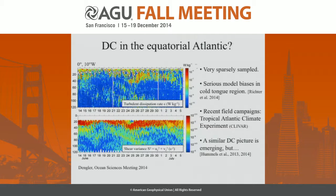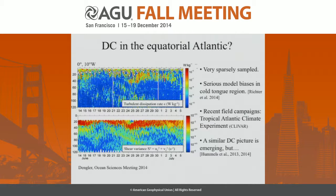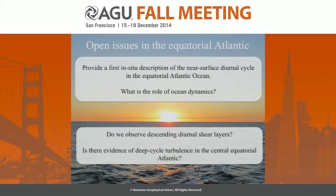Work is still being published from this, but the emerging picture is one of similar deep cycle turbulence, perhaps reduced in strength a bit relative to the Pacific. Notably, the diurnal cycle of turbulence has not been clearly resolved in observations in the Atlantic, with some suggestion of daytime enhancement of turbulence rather than nighttime enhancement as we see in the Pacific. So some interesting open questions.